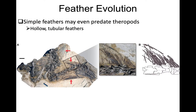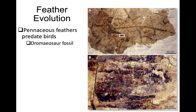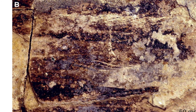We have evidence of very early non-avian reptile lineages having feathers, even predating theropods, showing those hollow tubular feathers. We even see modern pennaceous feathers — feathers with nicely integrated vanes — evolving in taxa that predate true birds. Here is a dromaeosaur fossil where you can see in close-up individual barbs coming off a central rachis.